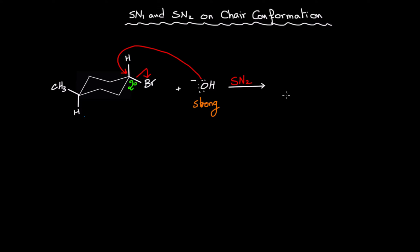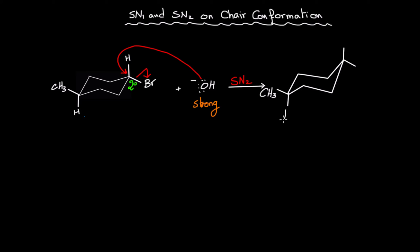In this case we obtain the following product. There is no change on this carbon, so if CH₃ is on axial it will remain on axial. The CH₃ on equatorial will remain on equatorial and the hydrogen will stay on axial. However, when the nucleophile attacked from the back side of the halide, it pushed the axial hydrogen to the equatorial, and the nucleophile sits on the axial.